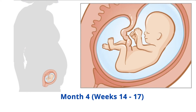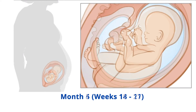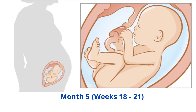Month 4, weeks 14-17: by week 14 the genitals are well developed, and by week 16 your baby is completely formed. Limb movements become coordinated. By week 17, your baby may move their eyes and show startle reflexes in response to loud noises.